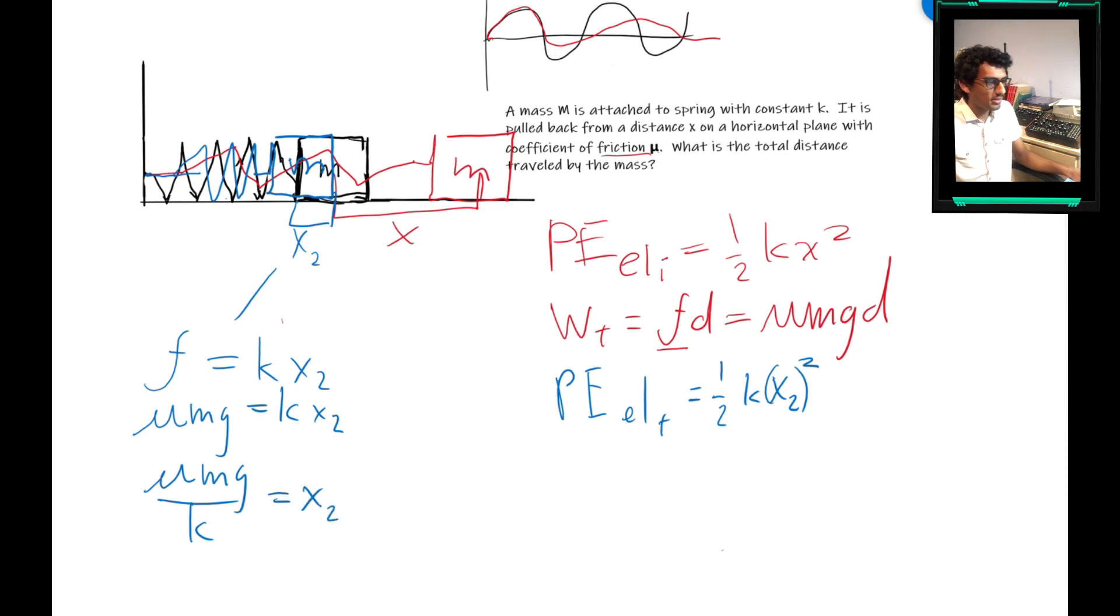Now we pretty much have everything we need, so we have the initial potential elastic energy. Once you take away the work and the final potential elastic energy, it'll equal zero. But of course, we want this written in the variables we know.